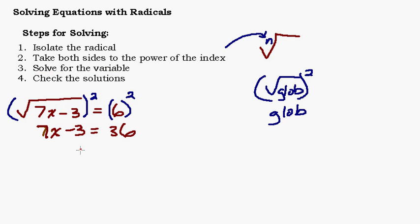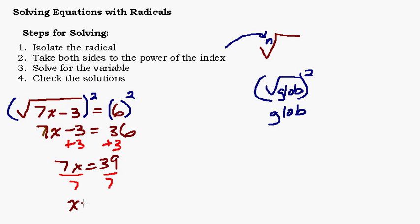Step number 3: solve for the variable. We're just going to add 3 to both sides and then divide by 7. We're going to get a fraction answer: x equals 39 over 7, which is also 5 and 4 sevenths.